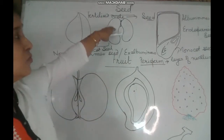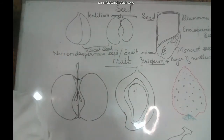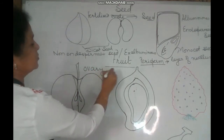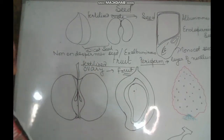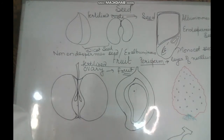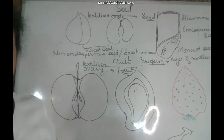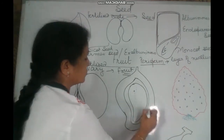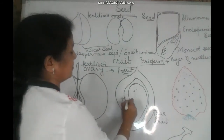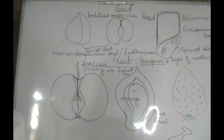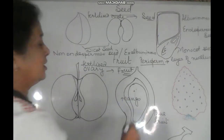When the fertilized ovule is developing into seed, at that time the ovary is developing into fruit. So a fertilized ovary develops into fruit. In botanical language, we have the word fruit only — we don't have any such word as vegetable, because every fertilized ovary is going to develop into fruit. When only and only the ovary participates in fruit formation, such fruits are called true fruits. Mango is one such example. The wall of the ovary becomes the wall of the fruit, and that is called the pericarp.